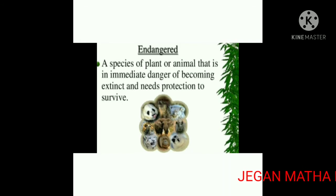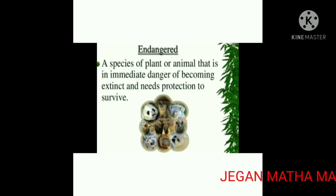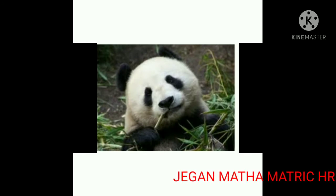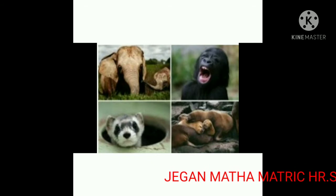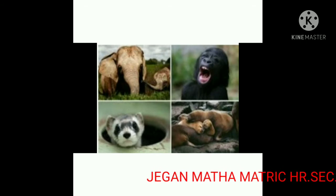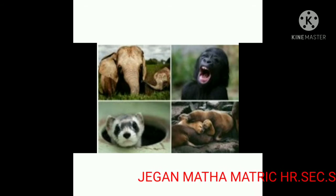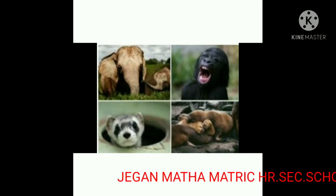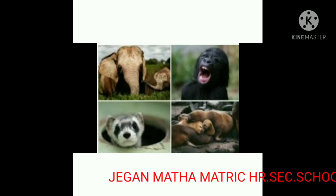A species of plant or animal that is in immediate danger of becoming extinct and needs protection to survive. An Endangered Species is an animal or a plant that is at the risk of extinction. It means that they might go extinct from the earth soon. It is reported that nearly 132 species of plants and animals are critically endangered in India.